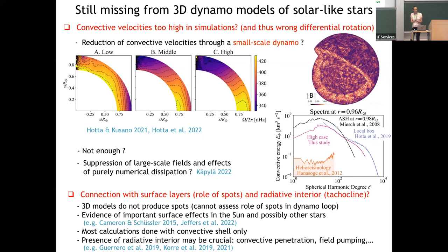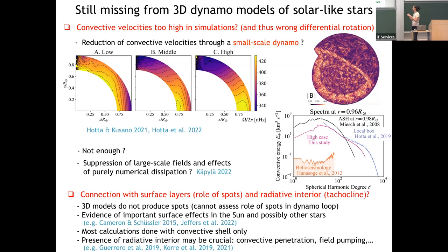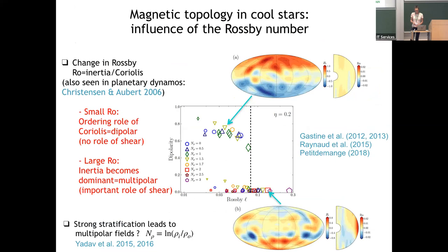There is also no radiative interior or atmosphere above in these 3D models, which might be a problem. For example, these models don't produce spots, which are thought to be crucial for dynamo operation via the Babcock-Leighton mechanism — supported by several observations. The radiative interior may also play an important role, such as building very strong toroidal fields and helping with convective penetration and pumping, and this is not yet sufficiently accounted for.